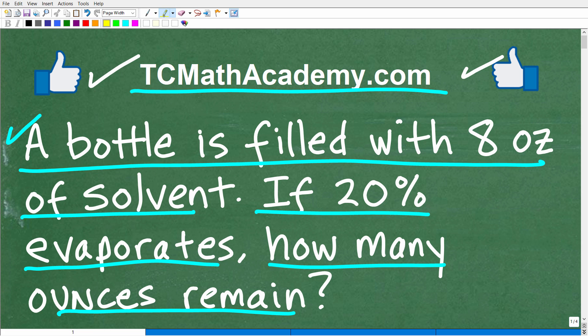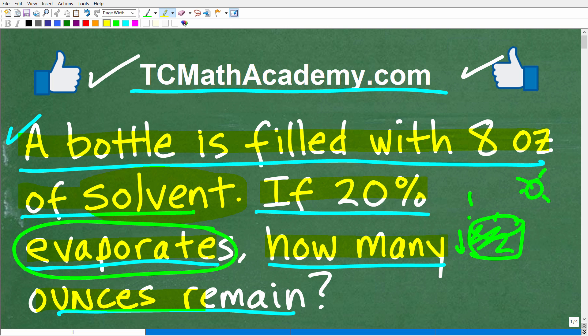All right, let's go ahead and take one more look at the question before I show you the answer. So a bottle is filled with eight ounces of solvent. Now, just in case you don't know what solvent is, it's effectively just some sort of chemical. Of course, there's more of a technical explanation of a solvent, but you can think of it as a chemical. Now, if 20% of this evaporates - this word right here, just in case you don't know what evaporates means - that just means kind of naturally burn off.